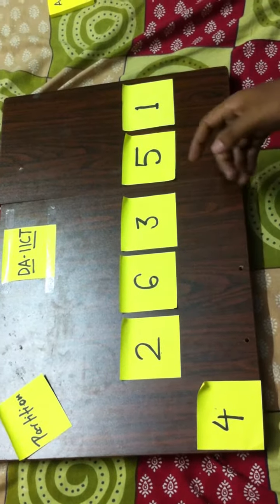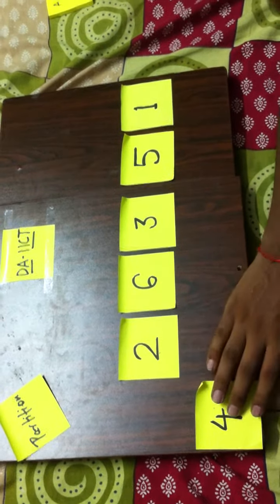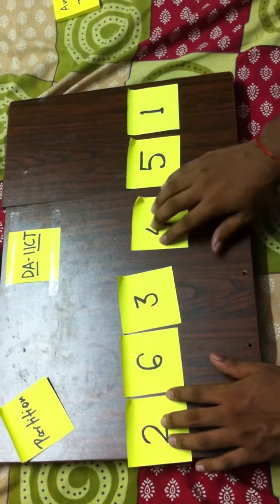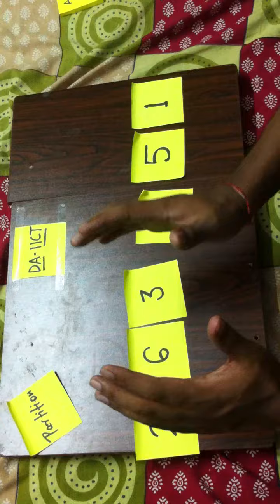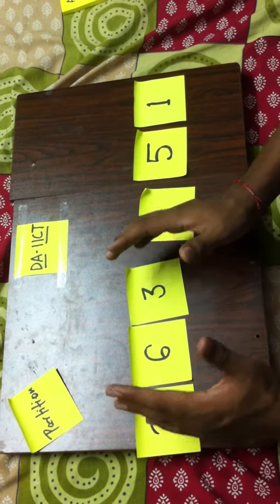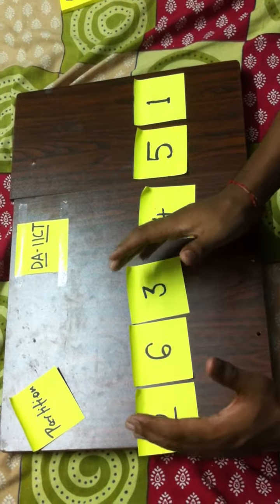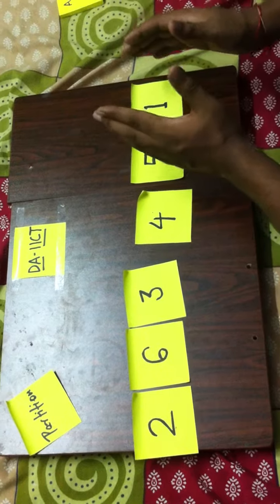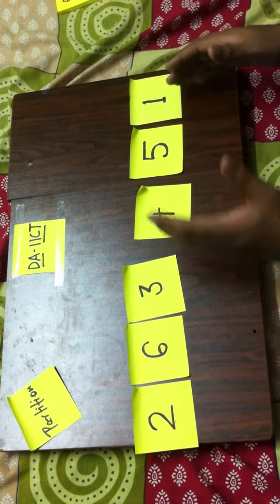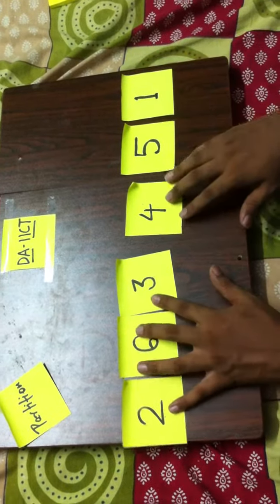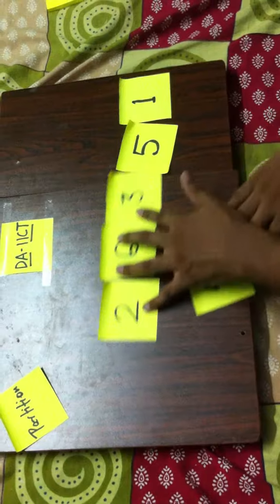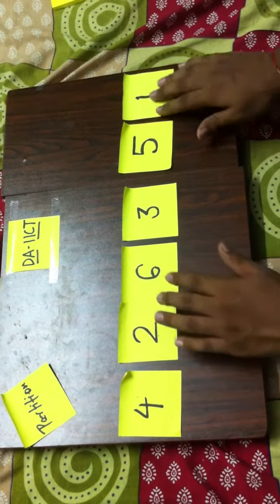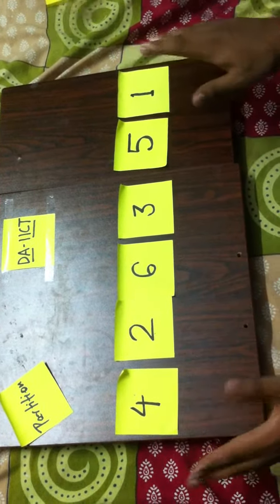4th position. So at the end of partition, 4 should reach the 4th position, and the left half of 4 should contain only those elements which are smaller than 4, and the right part of 4 should contain only those elements which are greater than 4. We will see how this can be implemented. This was the basic introduction to what partition is.